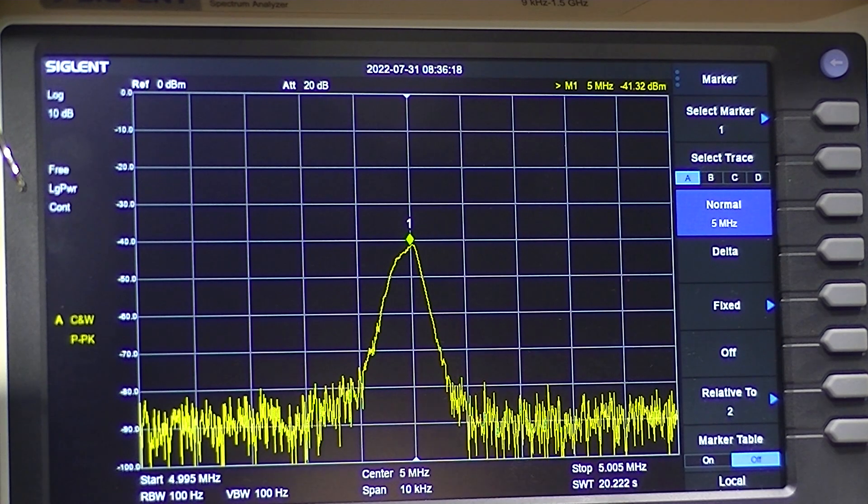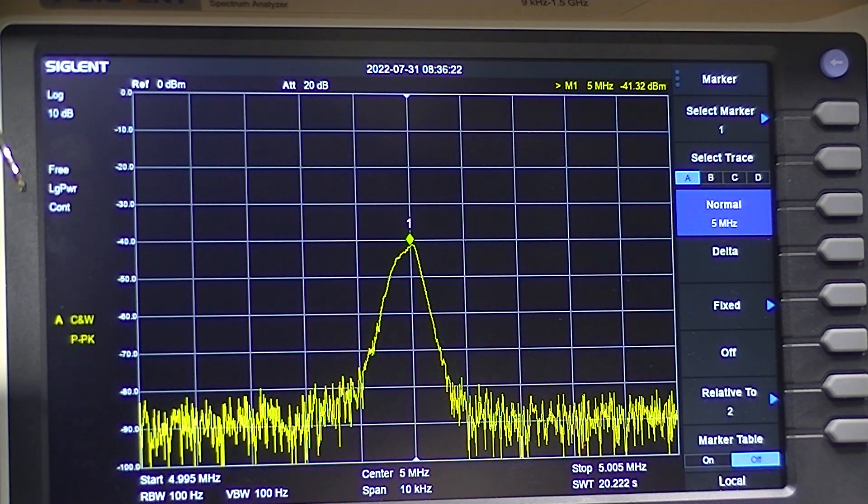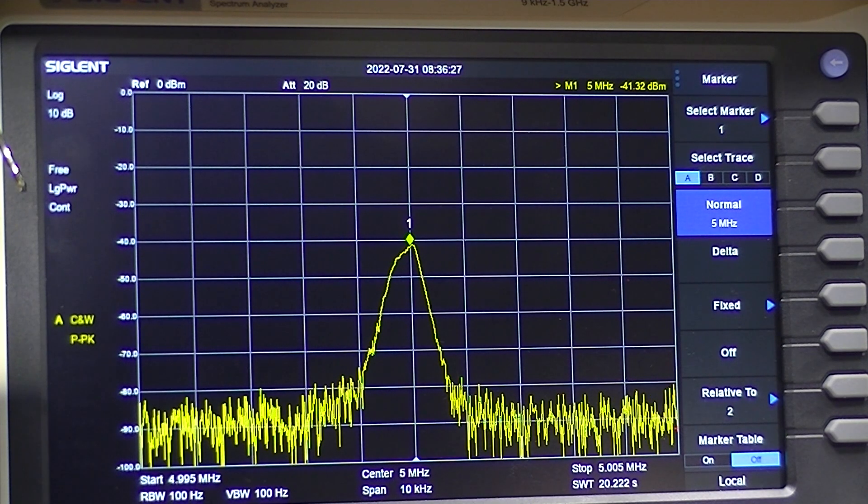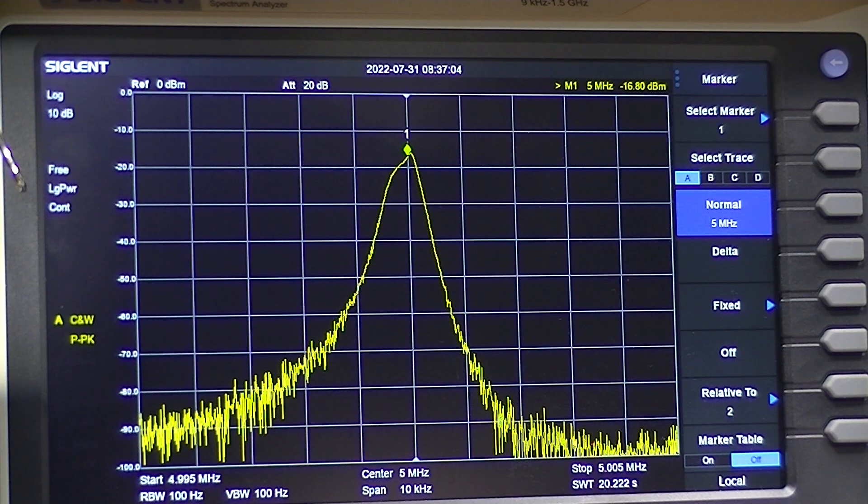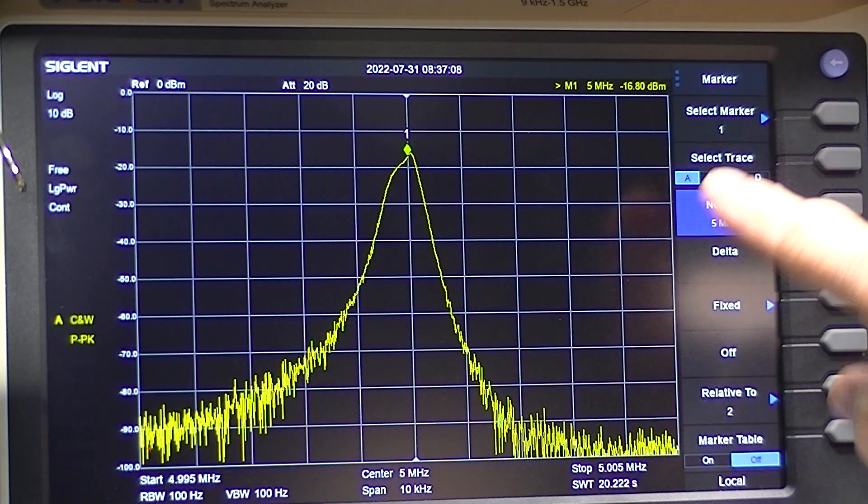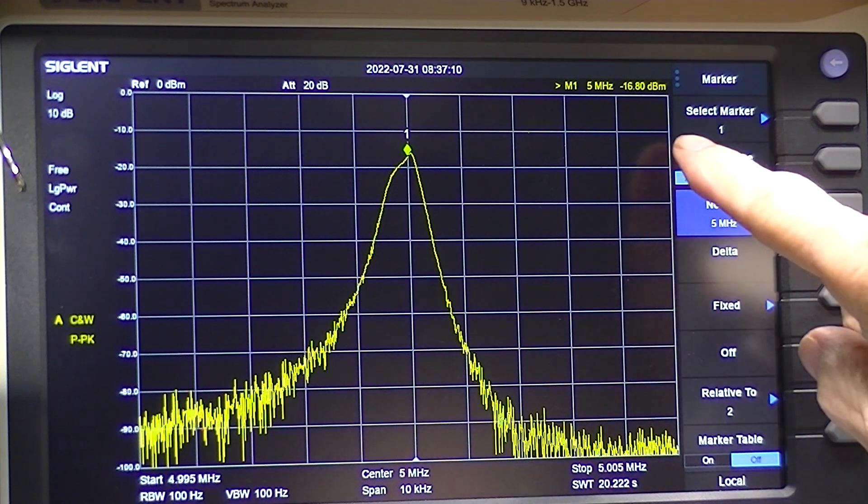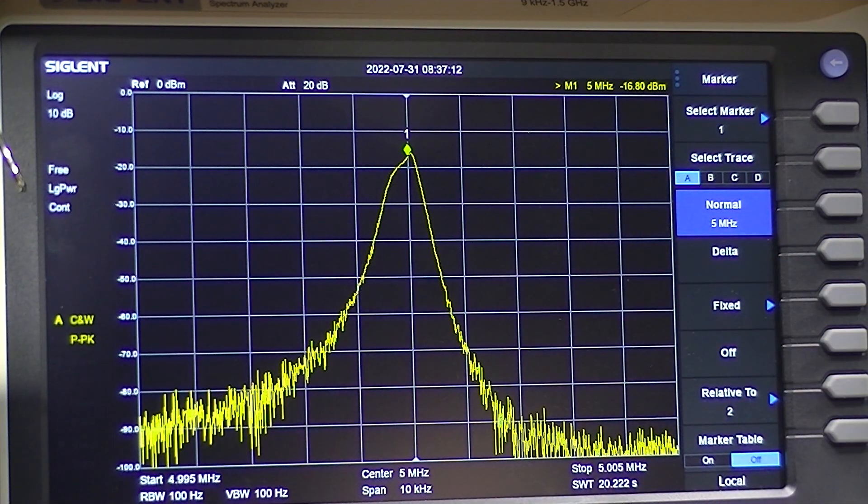I'll introduce the amplifier into the circuit. And here's the response curve with the amplifier. The gain is now, the output that is, is now minus 16.8 dB.